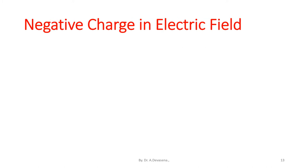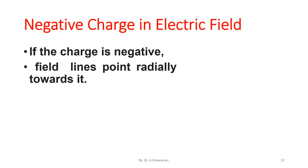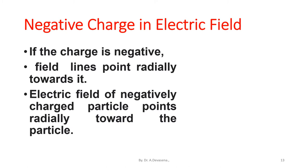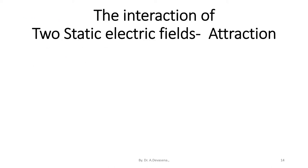In a negative charge in an electric field, if the charge is negative, field lines point radially towards it. The electric field of a negatively charged particle points radially toward the particle. Here is the representation of the negative charge.